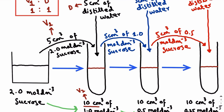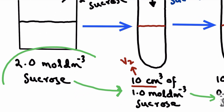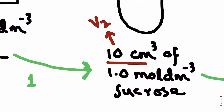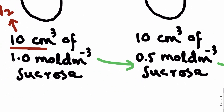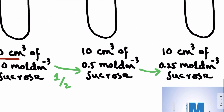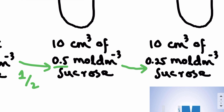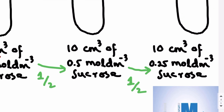For example, we had a stock solution of 2.0 mole per dm³ sucrose. In the first step we prepared 1.0 mole per dm³ sucrose solution — we reduced the concentration by half. In the second step we prepared 0.5 mole per dm³ sucrose from 1.0 mole per dm³, and in the third step we prepared 0.25 mole per dm³ from 0.5 mole per dm³ — again reduced to half each time.